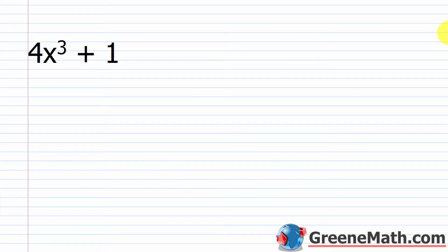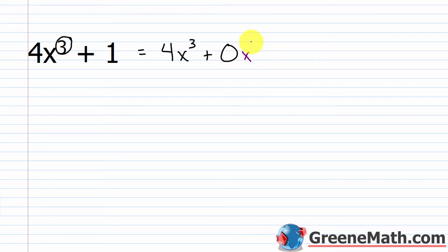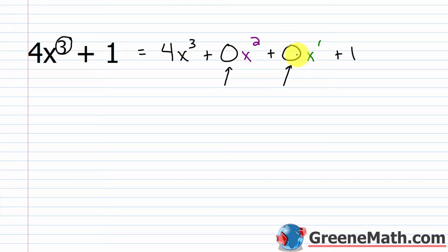Now look at something like 4x cubed plus 1. If I'm looking for what's missing, the highest power on x is a 3 — we have x cubed. So I'm missing x squared, and I'm missing x to the first power. I can rewrite this as 4x cubed plus 0x squared plus 0x to the first power, and then plus 1. So I have 0 as a placeholder and 0 as a placeholder — 0x squared and 0x to the first power — representing them with 0 as the coefficient, because 0 times anything is 0.